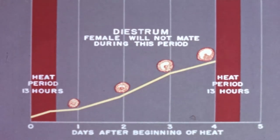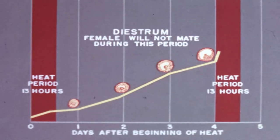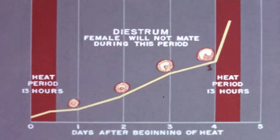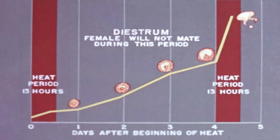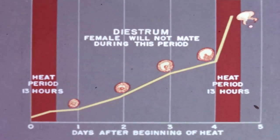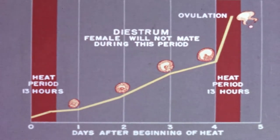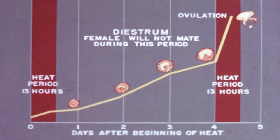The most rapid growth of the follicles occurs during the period of heat. Approximately 10 hours after the onset of heat, the follicles rupture, releasing the eggs, and ovulation has then been accomplished.